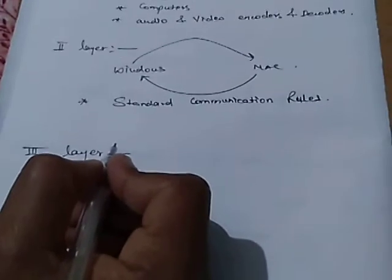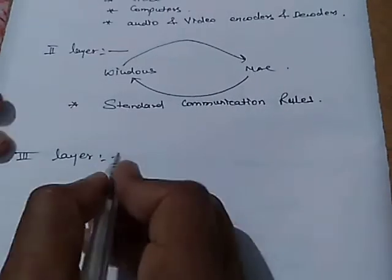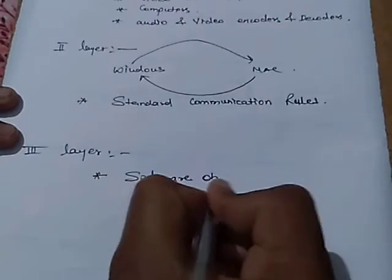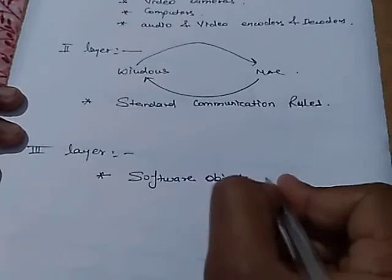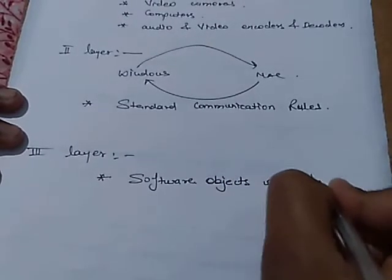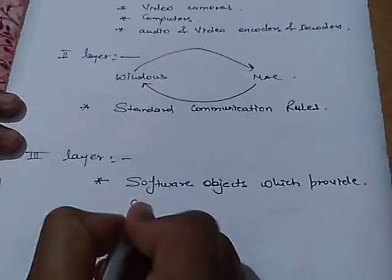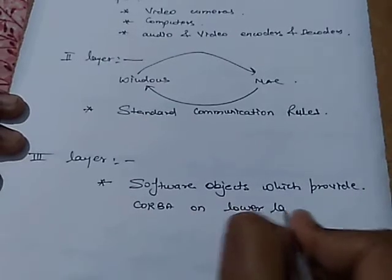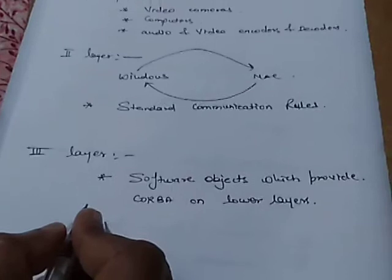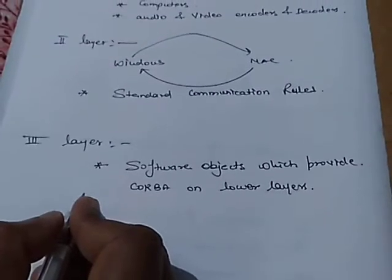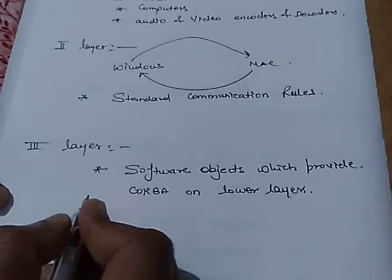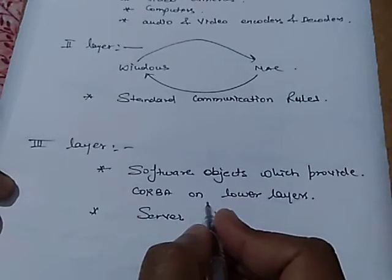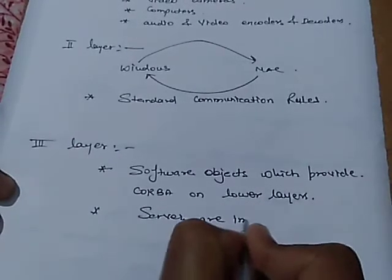The third layer is the stream control layer. This layer provides software objects which interface with CORBA on lower layers. This layer also provides servers in standard forms; audio and video stream control servers are implemented in this layer.